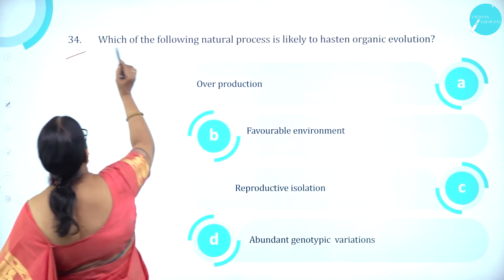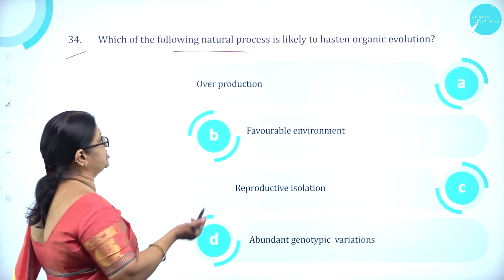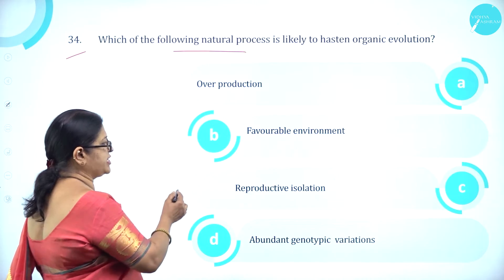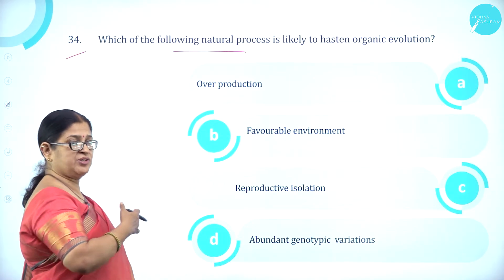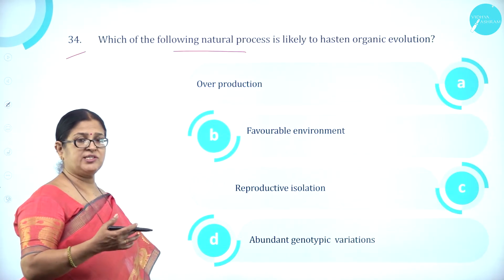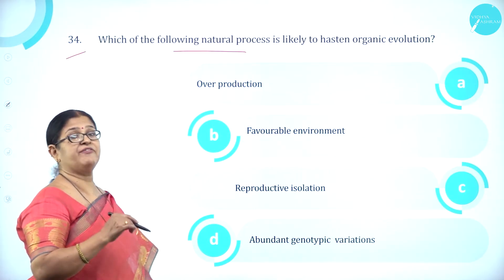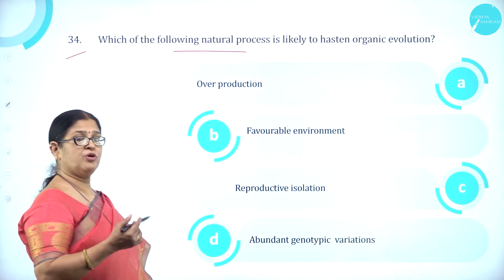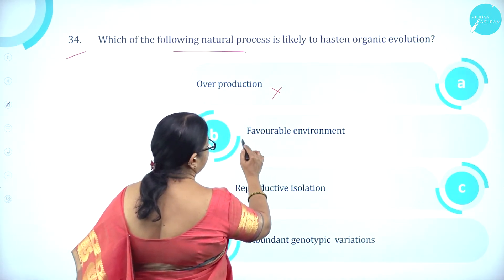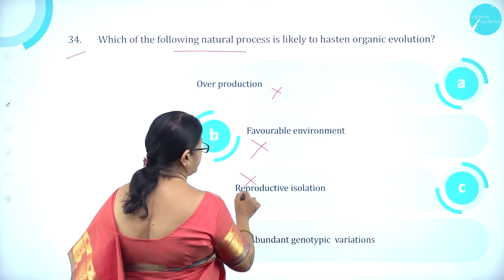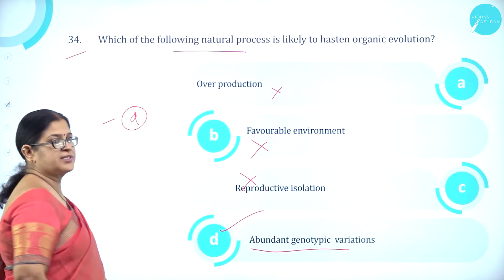Moving on to question number 34. Which of the following natural processes is likely to hasten organic evolution? Option A overproduction, option B favorable environment, option C reproductive isolation, option D abundant genotypic variation. Organic evolution is a gradual process of changes occurring in an organism over time, and it is hastened by genetic variations — the more genetic variations, the faster organic evolution proceeds. So option D abundant genotypic variation is correct.